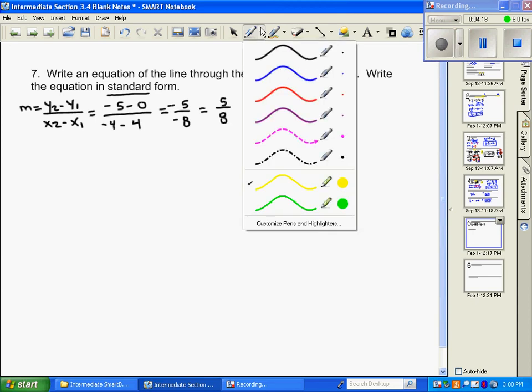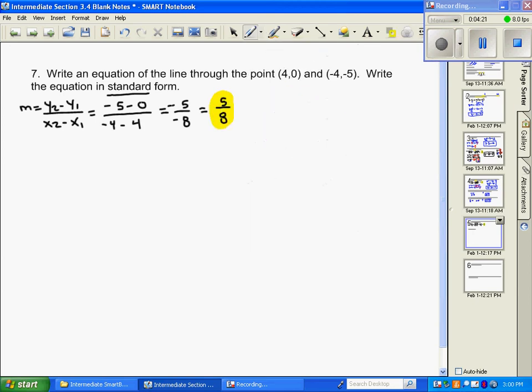So now that I have a slope, I want to choose one of the points. I'm going to choose this point. It doesn't matter which one. And I want to plug it into my point-slope formula. y minus y1 equals m(x minus x1). And you should be starting to get familiar with this form. y minus our y1 is 0. Our slope is 5 eighths. x minus, and our x1 is going to be 4.